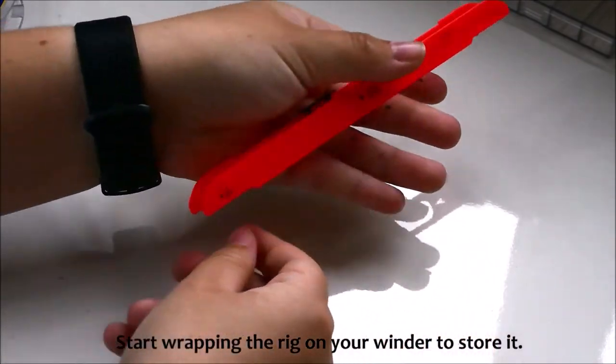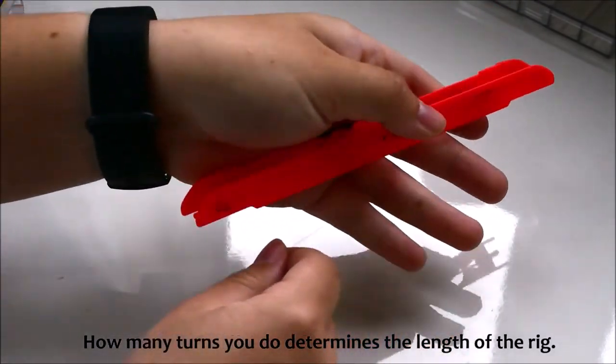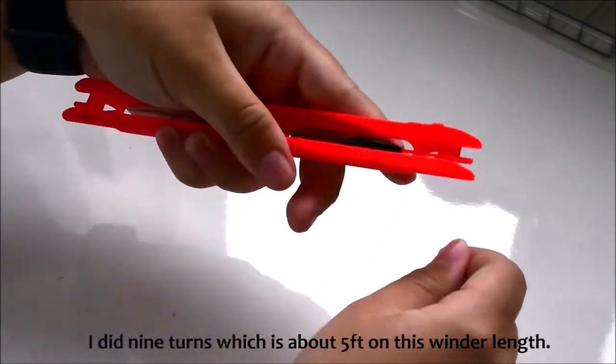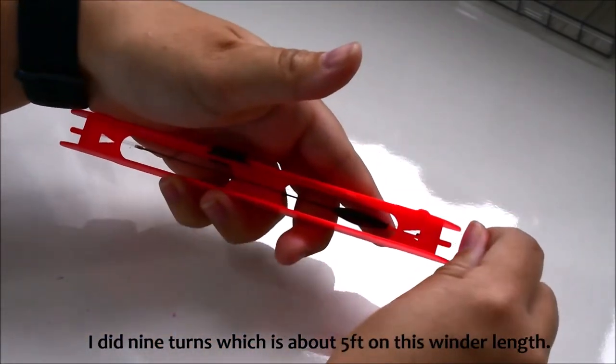Start backing in the rig on your winder to store it. How many turns you do determines the length of the rig. I did nine turns which is about five foot on this winder length.